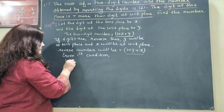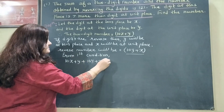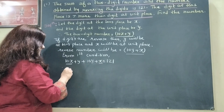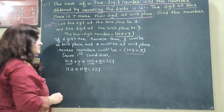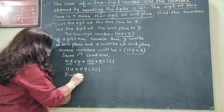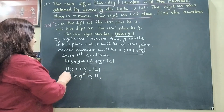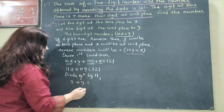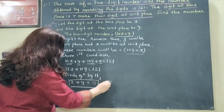So: (10x plus y) plus (10y plus x) equals 121. That gives 11x plus 11y equals 121. We divide the equation by 11: 11 cancels, giving x plus y equals 11. So this is equation number 1.